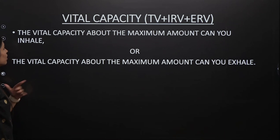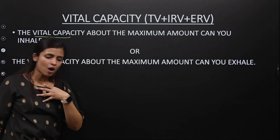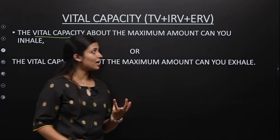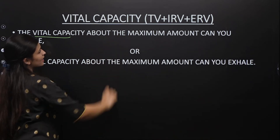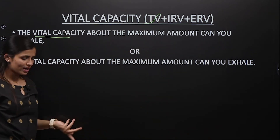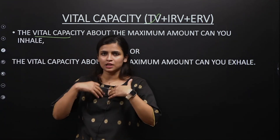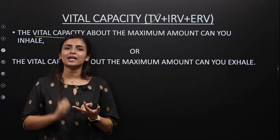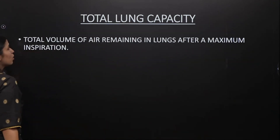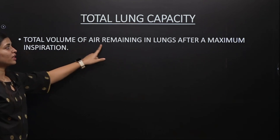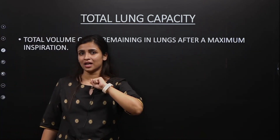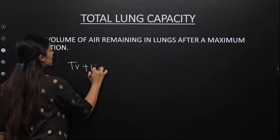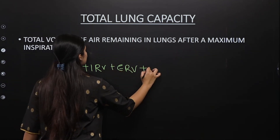Vital capacity is the total volume you can inspire — TV plus IRV plus ERV. It can also be described as the volume of air you can expire after a forced inspiration, since you have also inspired IRV and will expel it: TV plus IRV plus ERV. The total lung capacity is the total volume of air remaining in the lungs after maximum inspiration, equals TV plus IRV plus ERV plus RV.